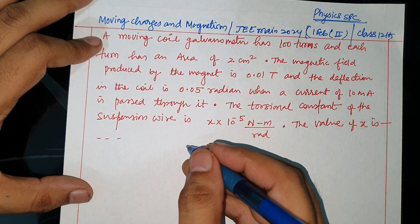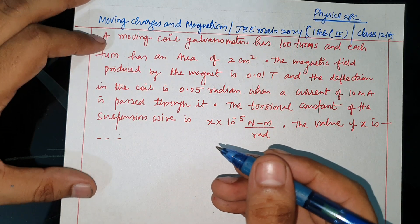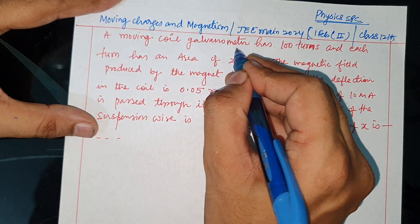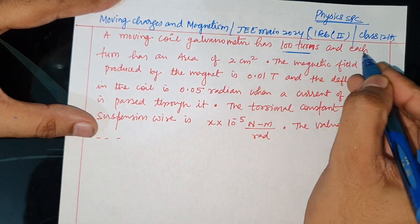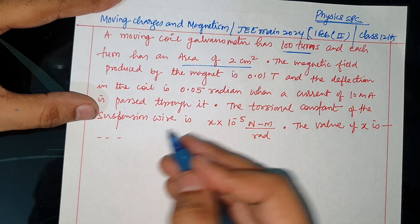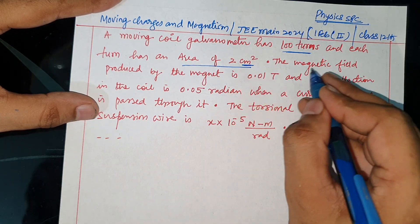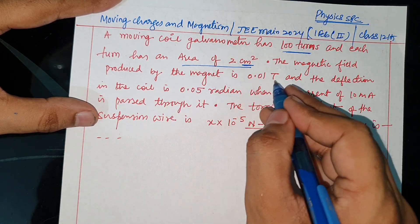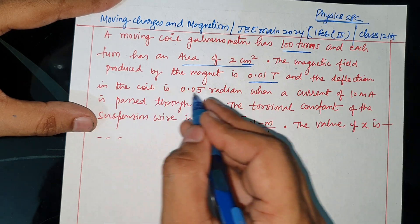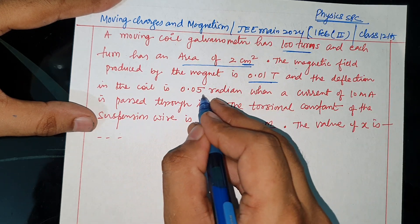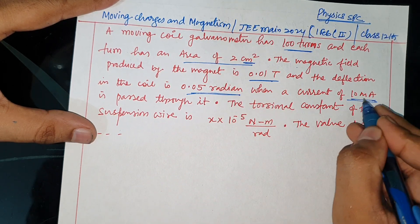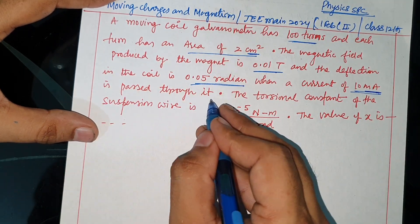Hello dear students, welcome back to my channel Physics SPC. Moving charges and magnetism - a question on moving coil galvanometer. A moving coil galvanometer has 100 turns and each turn has area 2 cm². The magnetic field produced by the magnet is 0.01 Tesla. The deflection in the galvanometer coil is 0.05 radian when a current of 10 milliampere is passed through it.